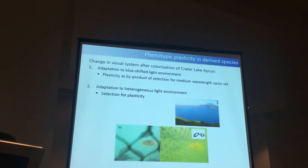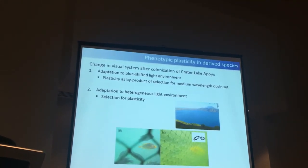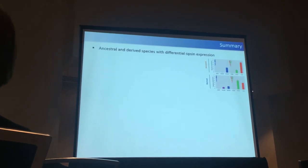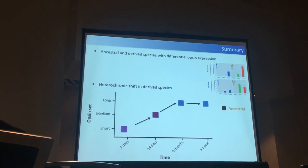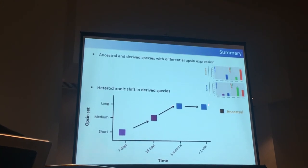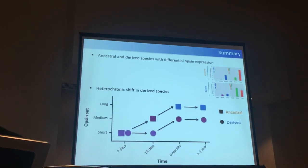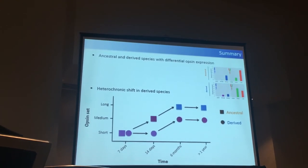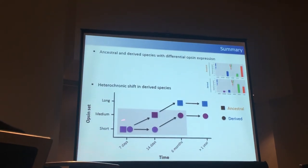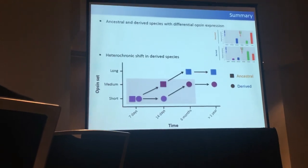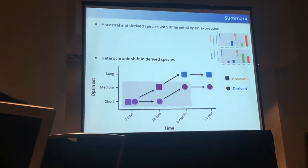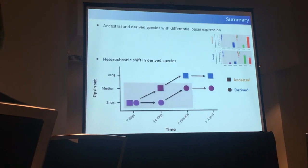To sum up: we have two species — one ancestral, one derived — showing differential opsin expression, and we find a heterochronic shift in the derived species. The ancestral species shifts from short to medium to long wavelength opsin sets during ontogeny, whereas the derived species gets stuck in the medium opsin set, maintaining a more juvenile phenotype into adulthood. We also see that the ancestral species loses phenotypic plasticity much earlier than the derived species. So there is a heterochronic shift in both opsin expression and phenotypic plasticity.